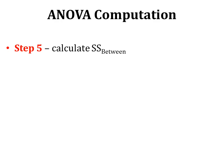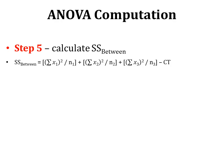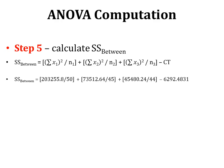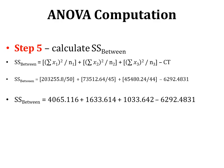Step 5 is to calculate the sum of squares between samples. We compute the squared summation x divided by n for each sample and subtract the correction term: (203,255.8 / 50) + (73,512.64 / 45) + (45,480.24 / 44) − 6292.4831. The sum of squares between is 439.89.